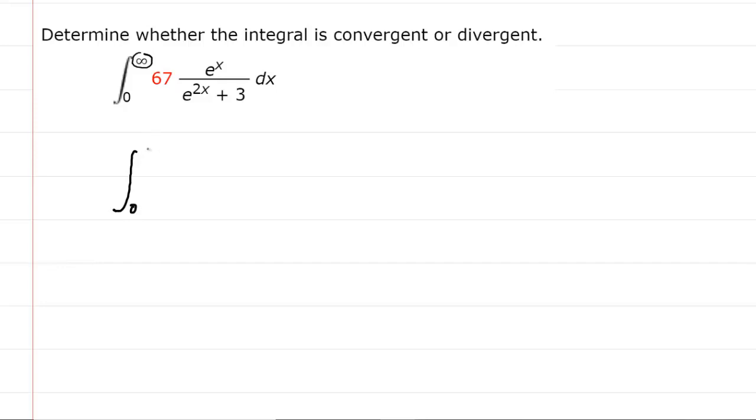The way you proceed with an improper integral is you change the infinity to the variable t. This will indeed work so long as we take the limit as t approaches infinity. Then you have your expression which we need to integrate: 67 multiplied by e to the x over e to the 2x plus 3, with respect to x.